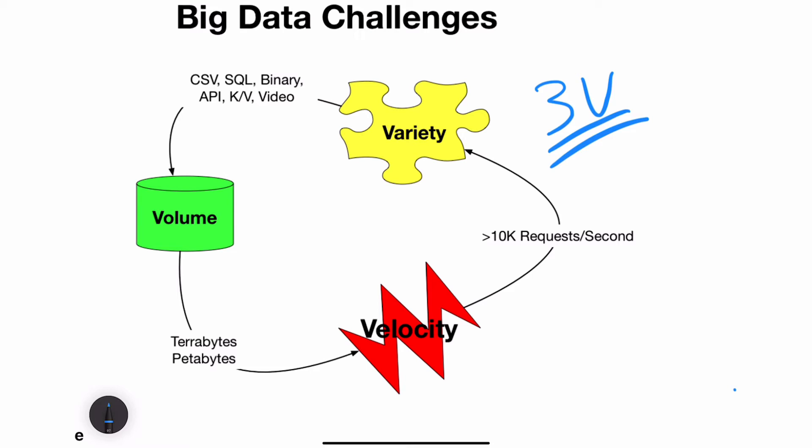Let's look at the second one here, which is Velocity. In particular, let's say you have 10,000 requests per second—you may be approaching a big data challenge.